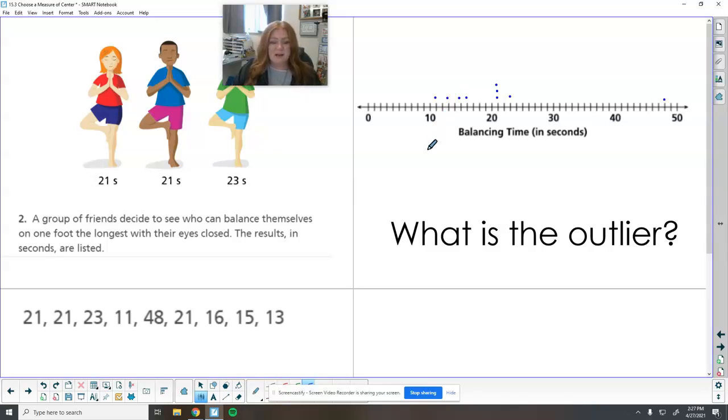What's an outlier on this one? What number is so far away from the rest of them? One person did awesome and did 48 seconds, but the rest of them are in the tens and twenties. That's the outlier. It's not like the rest of them.